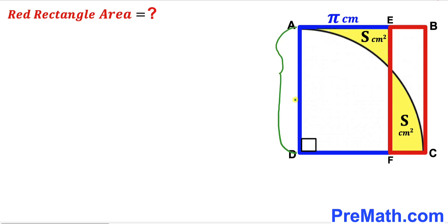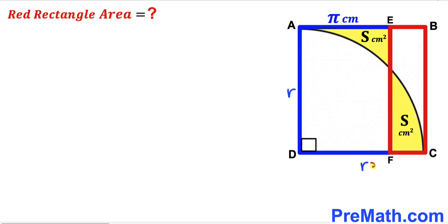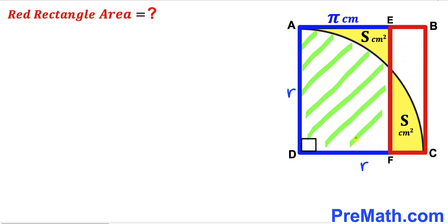In the next step, I'm going to label the radius of this quarter circle as lowercase r — so radius CD is also lowercase r. Our task is to find the value of this radius r. I'm also going to label the white area (the green shaded region) as uppercase A centimeter square.